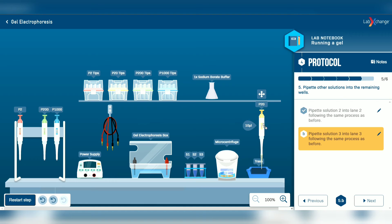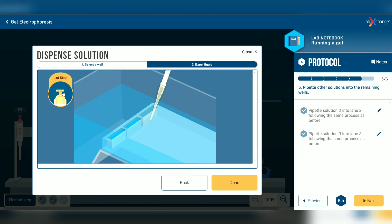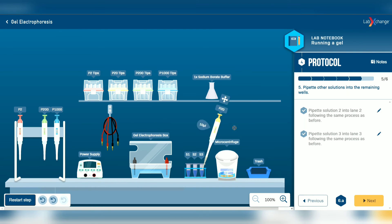Now eject the tip again and replace with a new tip to transfer the S3 solution to the agarose gel. This time we release the S3 solution in third well. Also press until first stop. Now eject the tip.